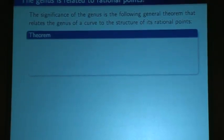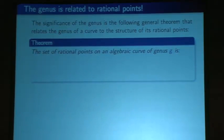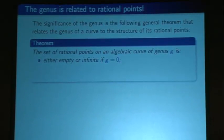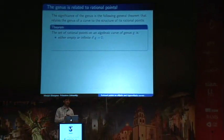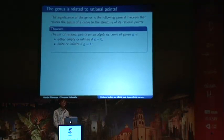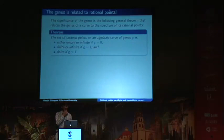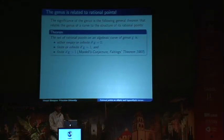The significance is the following theorem: if you take the set of rational solutions to a two-variable polynomial whose graph in ℂ² has genus g, then that set of rational points on an algebraic curve of genus g is either empty or infinite if the genus is zero. If there's one donut hole — genus one — then the set of rational points is either finite or infinite. If the genus is more than one, then the number of rational solutions will definitely be finite. This is the famous Mordell's conjecture, proven by Faltings in 1983.